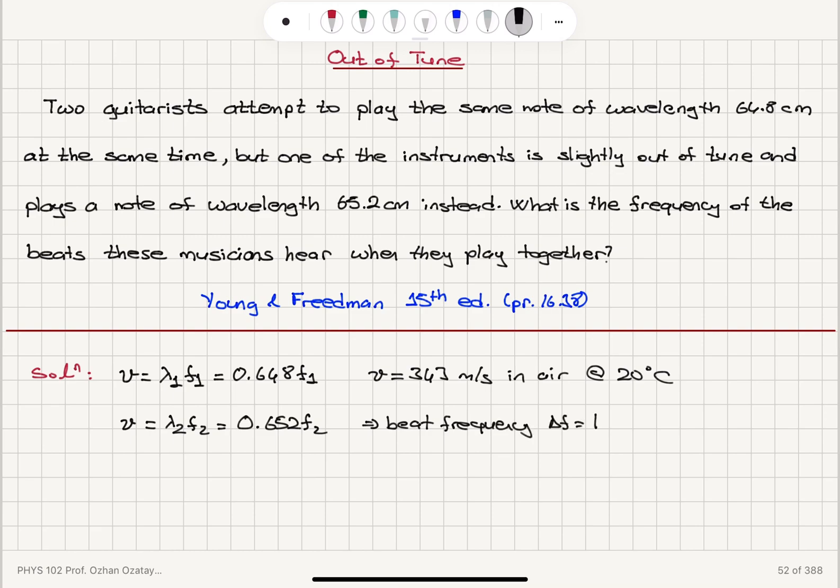which is the absolute value of difference between F1 and F2. So that would be equal to V divided by lambda 1 minus V divided by lambda 2. So this is delta F,